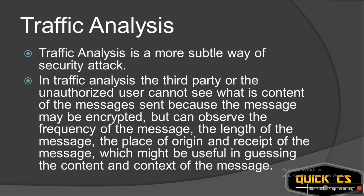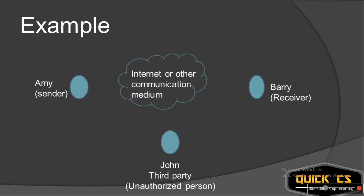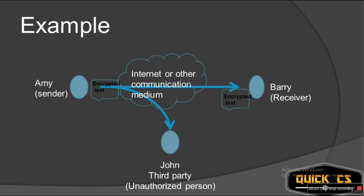For example, Amy is the sender and Barry is the receiver. Amy is smart — she is sending encrypted text to Barry. John, the third party person, may receive the text, but since it is encrypted, it is gibberish to him. However, he may get the length of the text, from where Amy is sending, from where Barry is receiving, and how often Amy is sending messages to Barry. Based on that analysis, John, the unauthorized person, can do the guesswork. That is why this is a very subtle way of attack.